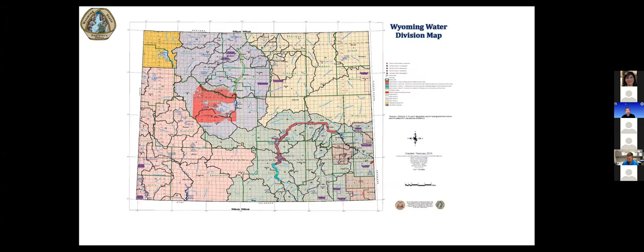Thank you, Nicole. Now we'll have Jeff Cowley with the State Engineer's Office to discuss water rights administration. The map shown here is the divisions and district maps for the state of Wyoming. The southeast corner of Wyoming is Division 1, northeast corner is Division 2, the middle north in blue is Division 3, and the reddish color in the west is Division 4. Later in the season as we get more calls and present those, Tony will start to highlight some of those districts, the smaller pieces of the divisions, so you'll be able to see what are calls and what are not.